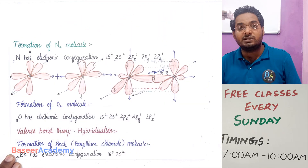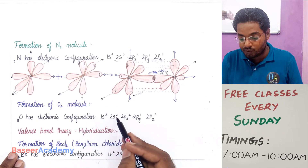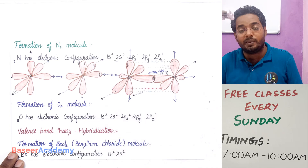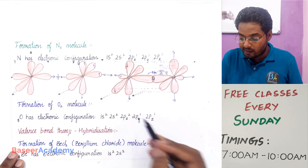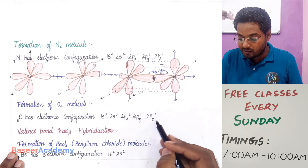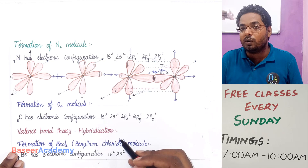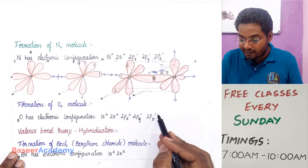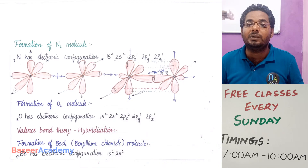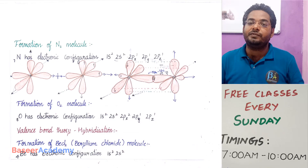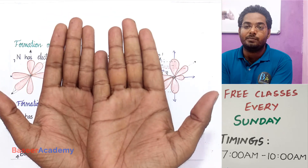Let us also consider the formation of the oxygen molecule. Oxygen has atomic number 8 and electronic configuration 1s², 2s², 2px², 2py¹, 2pz¹. Oxygen has one unpaired electron in 2py and one unpaired electron in 2pz. Since oxygen has two unpaired electrons, it can form two bonds — a double bond. When it forms two bonds, the first bond is obviously a sigma bond and the second bond will be a pi bond.